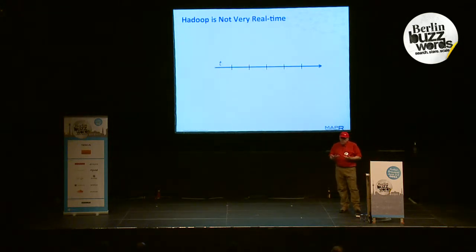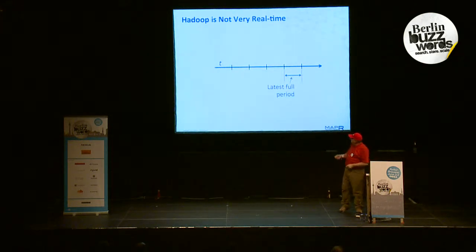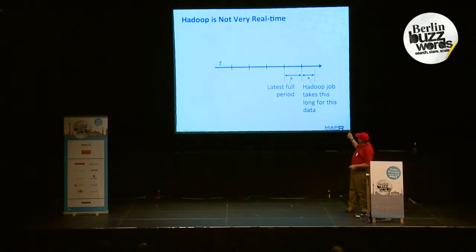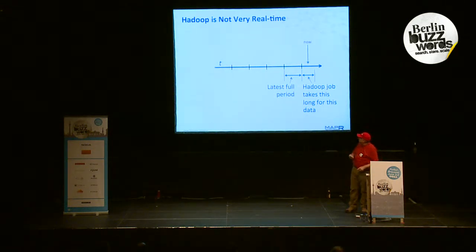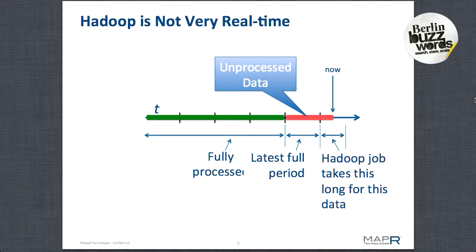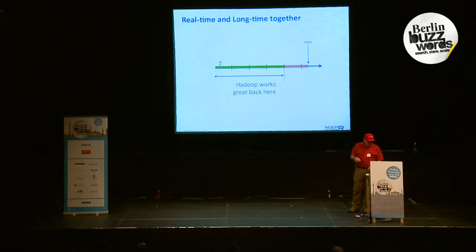Here's the picture of the problem. We have a timeline that goes from very long ago to very much now. We have the most recent full period of analysis — might be one hour, might be a day. It takes some time after the end of that period for Hadoop to get its job done. That means Hadoop can process all of this green region, but it leaves this red region unprocessed. It cannot process the last full section until that full section is finished, plus time for it to do its work.